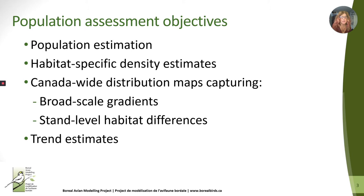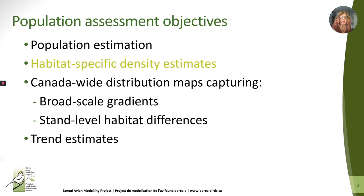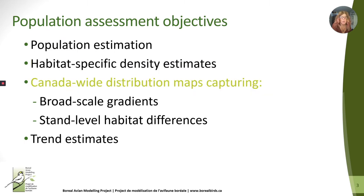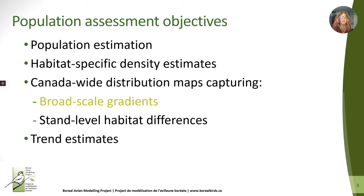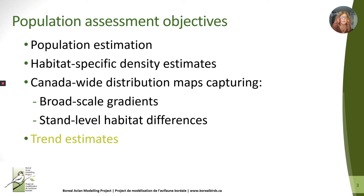The Boreal Avian Modeling Project is focused on research, but one of the core goals is to inform population assessment. With our new models, we aim to develop an integrated approach that could achieve a range of objectives at once. Specifically, our models are intended to result in population estimates, habitat-specific density estimates, as well as Canada-wide distribution maps that capture both broad-scale climate gradients and local habitat differences. The intention is also to use our abundance models to improve regional trend estimates.